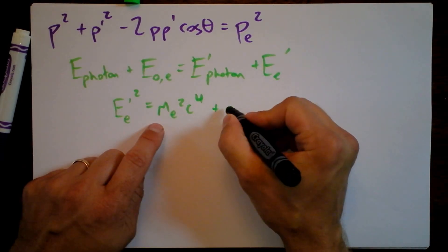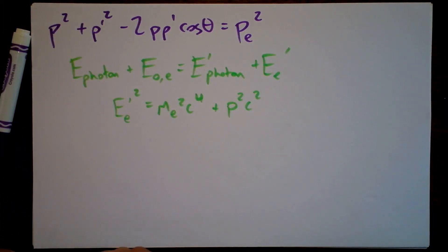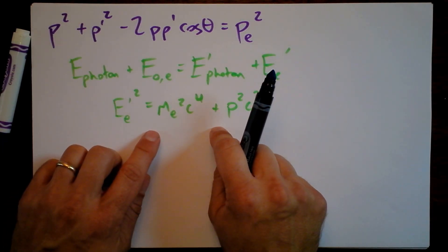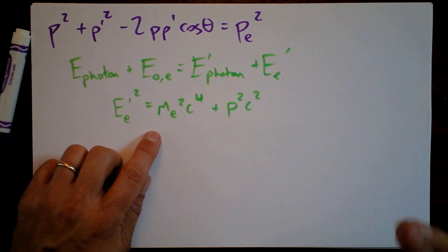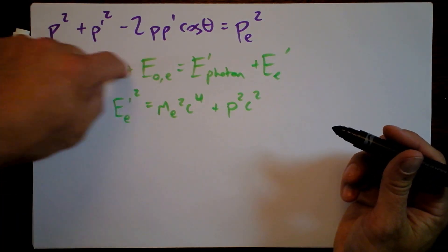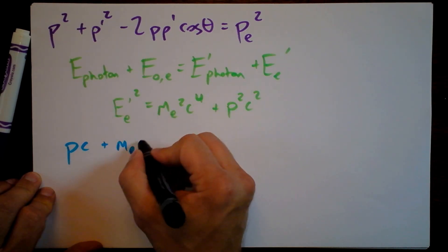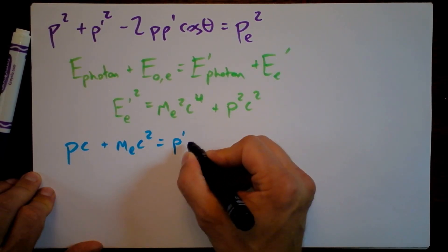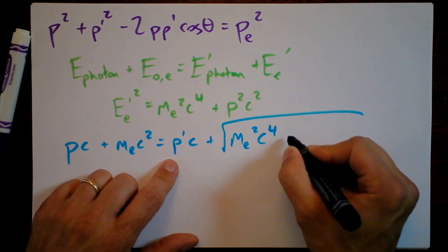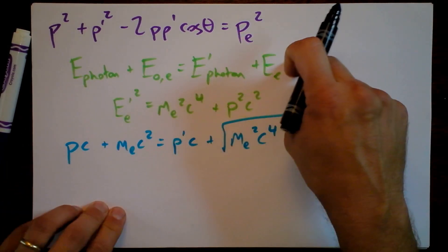For this electron, energy in general is the mass of the electron squared times c to the fourth — that's E equals mc squared, but just the rest energy. Now we need to talk about the kinetic energy, which when squared is p squared times c squared, even for an electron. So we'll shift to battery-charged blue because we're still talking about energy. My plan is to take this term and plug in the square root of that expression — plugging in that the energy of a photon is p times c, plus the mass of the electron times c squared, plus p prime times c, all inside a square root of mass of the electron squared times c to the fourth plus momentum of the electron squared times c squared.